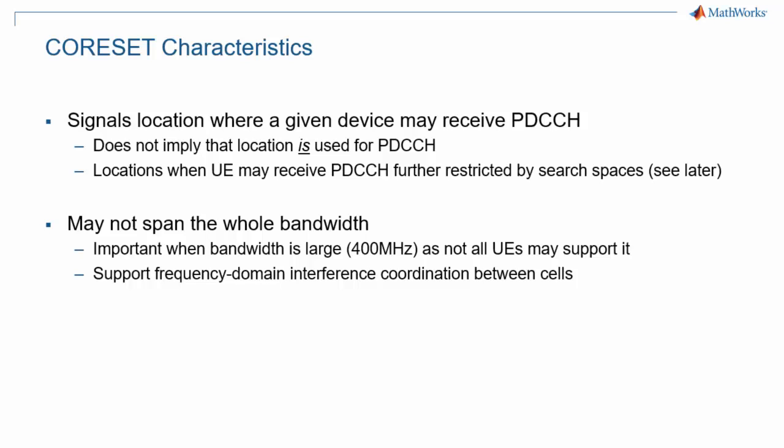Also, a core set may not span the whole bandwidth. This is particularly important because UEs in a cell may not support the whole bandwidth, which may be up to 400 MHz, but they still need to be able to decode control information. As control regions are flexible, 5G new radio supports frequency domain interference coordination between cells, meaning that neighboring cells can plan their core set locations to avoid inter-cell interference affecting the control signal.